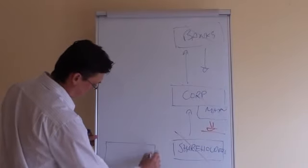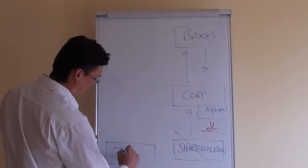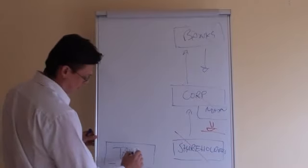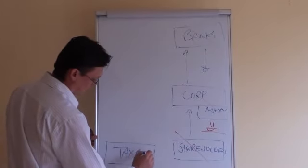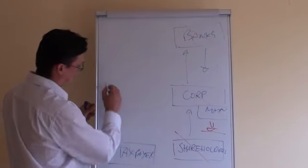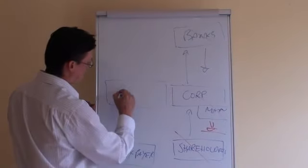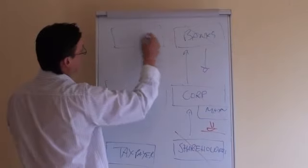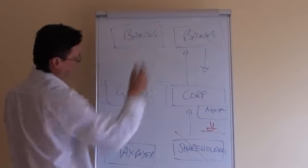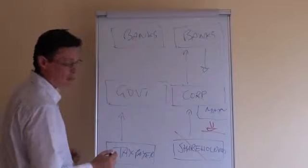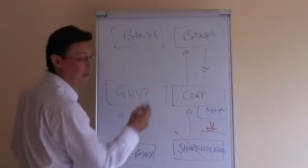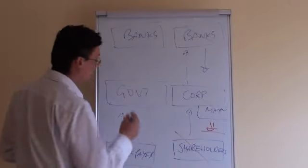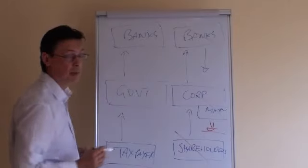But the difference with governments is that you have a taxpayer. You have government. And you have banks. Now the difference is, the taxpayer funds the government. The government, again, wants to improve its services offering to the public. So it can get some funding from banks.